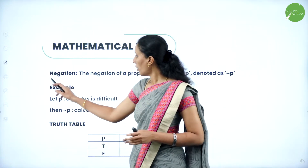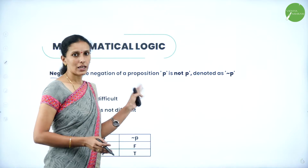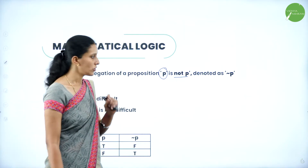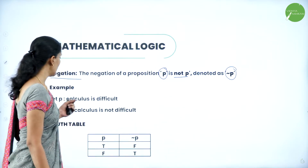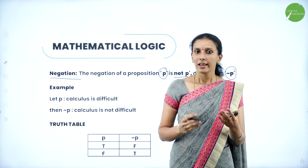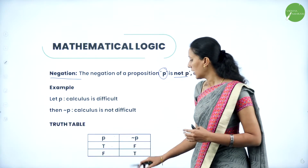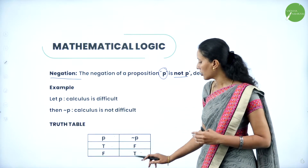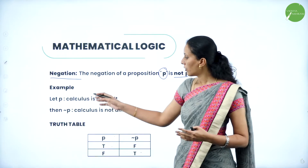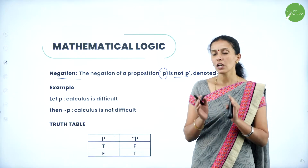The next connective is negation. The negation of a proposition means writing exactly the opposite of the given proposition. If P is a proposition, then not-P is its negation, denoted by ¬P. For example, if P is 'calculus is difficult,' then not-P is 'calculus is not difficult.' From the truth table: if P is true, then ¬P is false; if P is false, then ¬P is true — it is exactly opposite to the given statement.